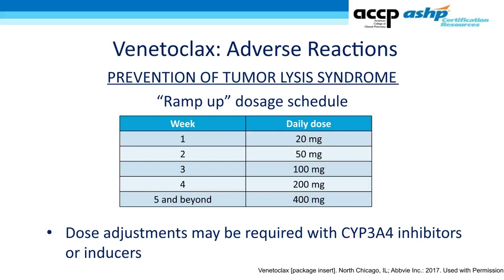For venetoclax, the BCL-2 inhibitor, the most important adverse reaction is tumor lysis syndrome — a surprising effect in early trials that led to patient deaths. Because of this, venetoclax now has a ramp-up dosage schedule to mitigate TLS risk. Additional recommendations for TLS prevention are detailed in the handout and prescribing information. Venetoclax also has drug interactions for which dose adjustments may be required.